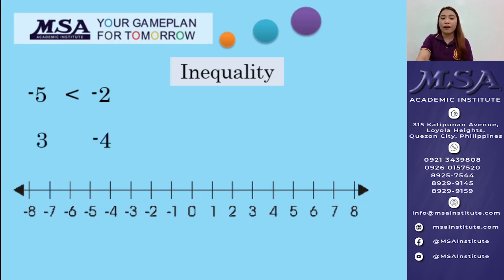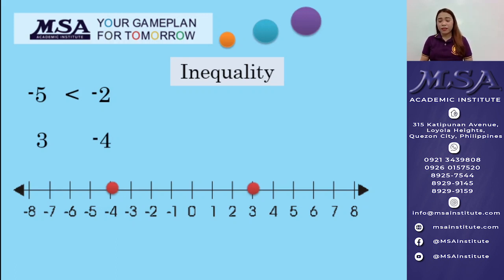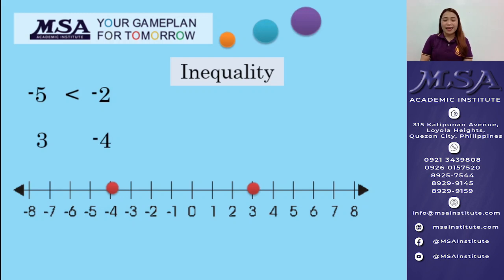Another example: we have 3 and negative 4. Negative 4 is there and 3 is there. As you can see, 3 is located on the right side of negative 4, and that means 3 is larger than negative 4. So, we will use the inequality symbol greater than: 3 is greater than negative 4.